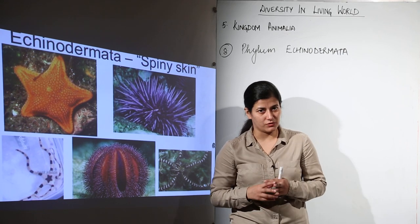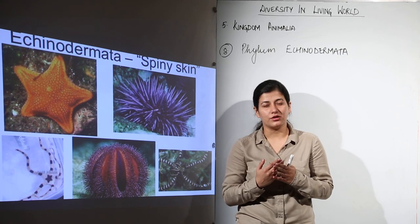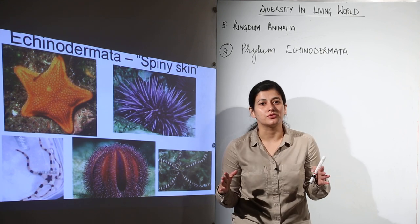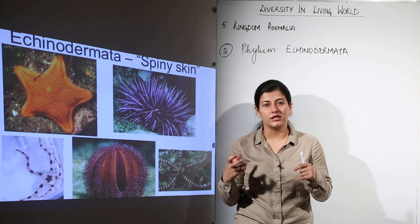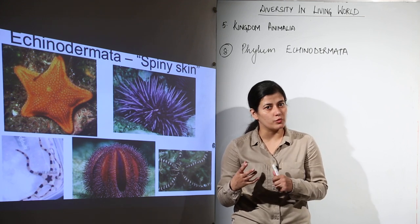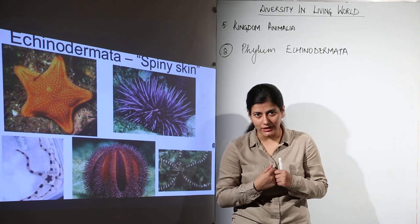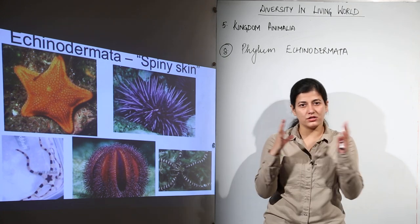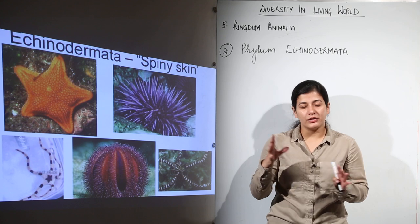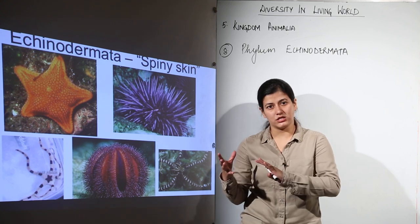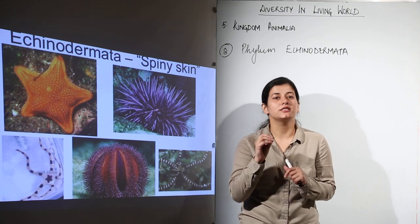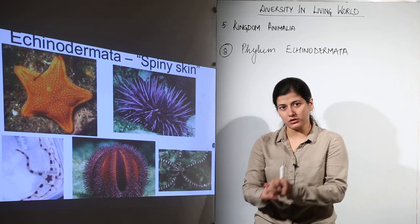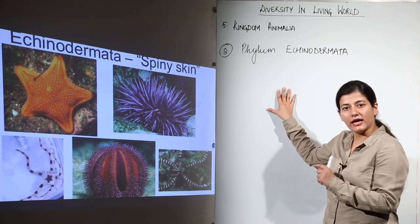We have come to the last phylum of non-caudates. Non-caudates were those organisms which do not possess the notochord — the structure from which the vertebral column, or backbone, is derived. We are going to finish with organisms which do not have a notochord in any stage of their life, and the last phylum we are going to study in the non-caudates is phylum Echinodermata.